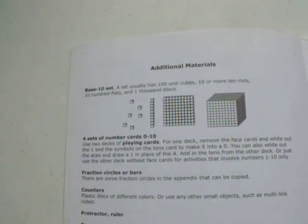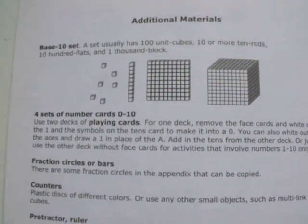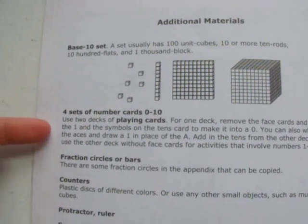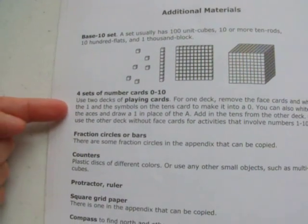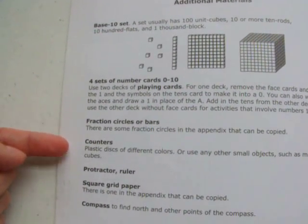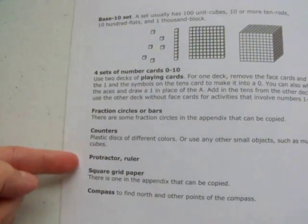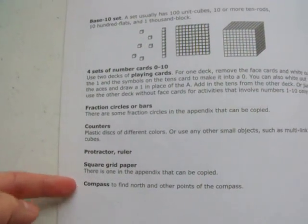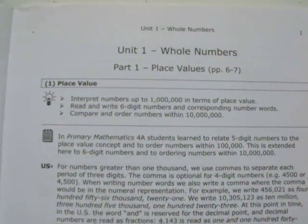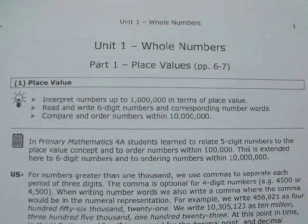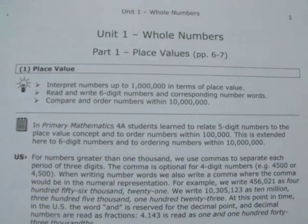Then it tells you the materials that you will need. So you'll need a base ten block, four sets of number cards, zero through ten, fraction circles or bars, counters, protractor and ruler, and square grid paper and a compass. So here is the first lesson. Unit one, whole numbers, part one, place values. So this is the topic for that lesson.